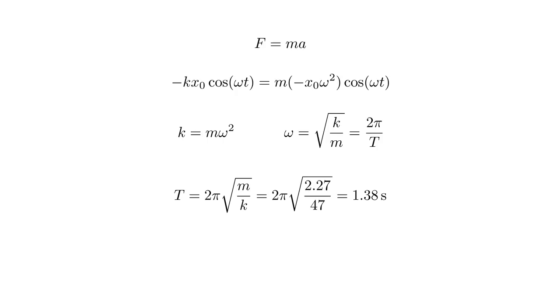Plugging in the mass, 2.27 kilograms, which is five pounds, and the spring constant, 47 newtons per meter, we find a period of 1.38 seconds. The half period is 0.69 seconds, or 690 milliseconds.